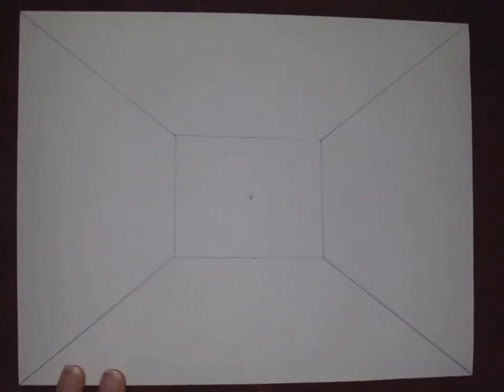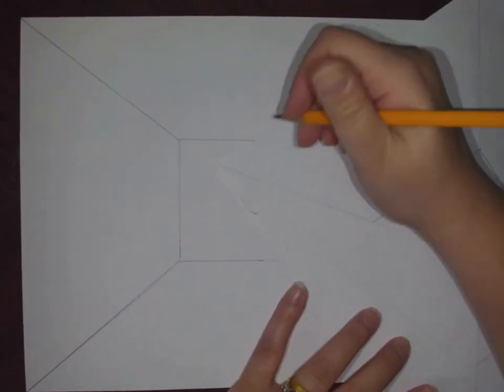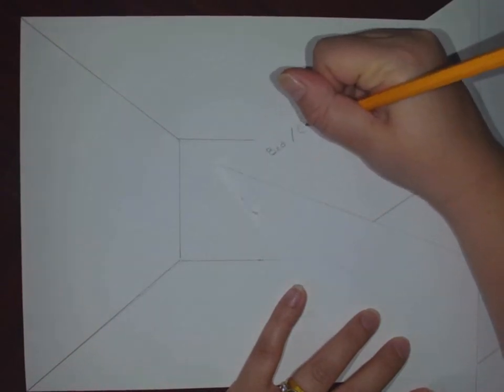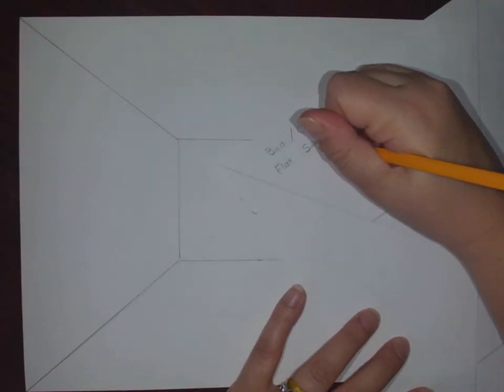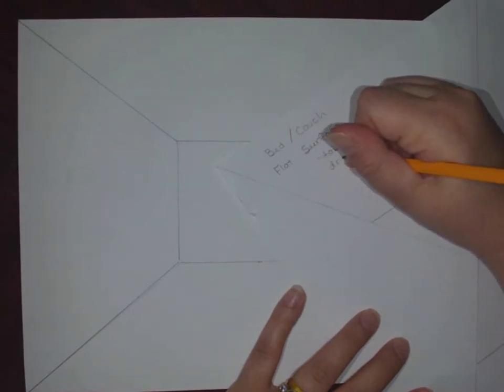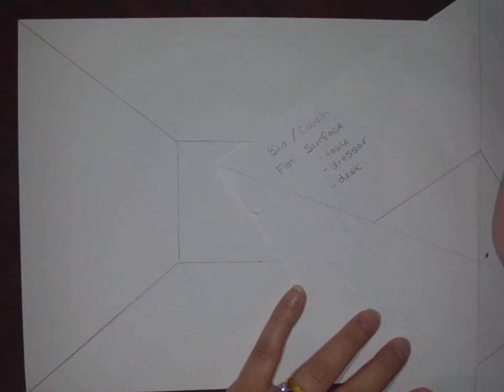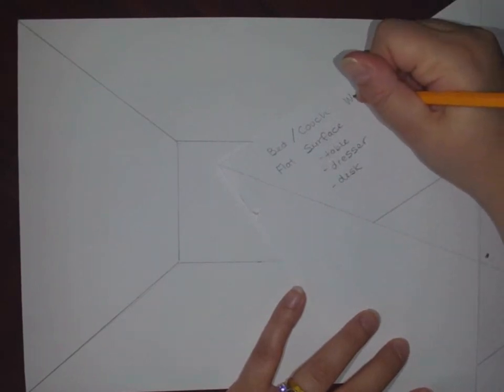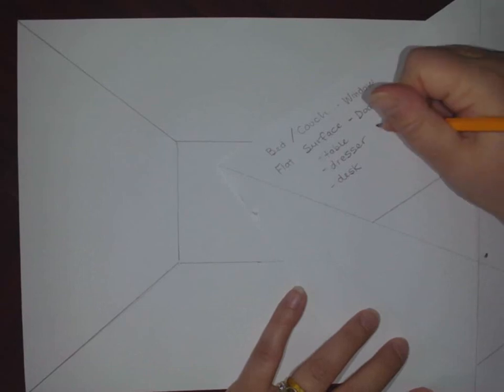Now, there are certain things that I want you to include in this room. You can make it whatever you want. It can be a bedroom. It can be a living room. It can be an apartment. But for our situation, I want either a bed or a couch. I want a flat surface. So that can be a table, a dresser, a desk, any of those things, depending on what you want. And you have to include windows,